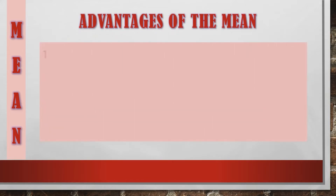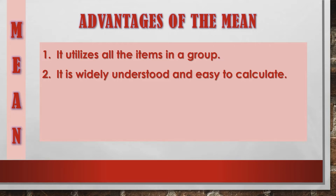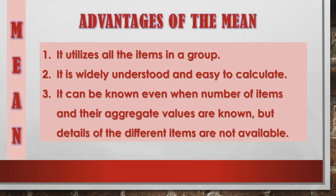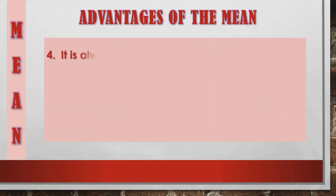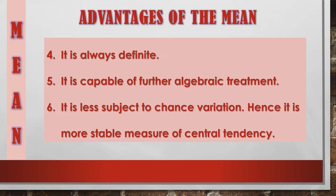What are the advantages of the mean? First, it utilizes all the items in a group. Second, it is widely understood and easy to calculate. Third, it can be known even when only the number of items and their aggregate values are known, but details of individual items are not available. Fourth, it is always definite. Fifth, it is capable of further algebraic treatment. Sixth, it is less subject to chance variations, making it a more stable measure of central tendency.